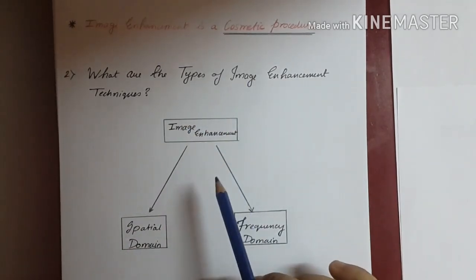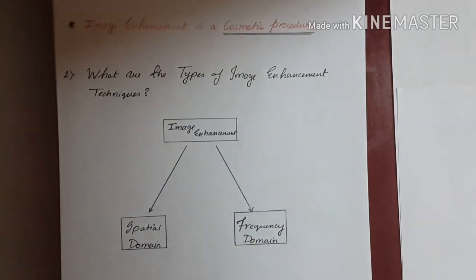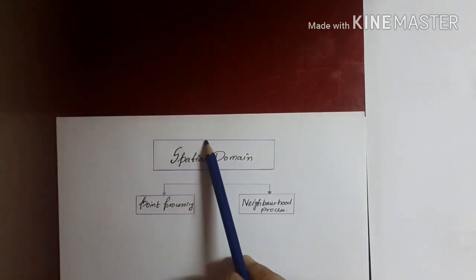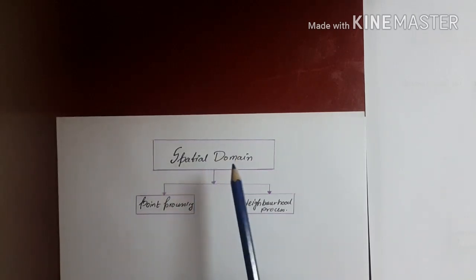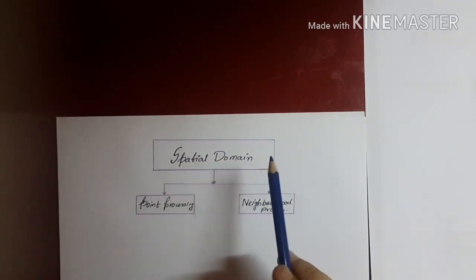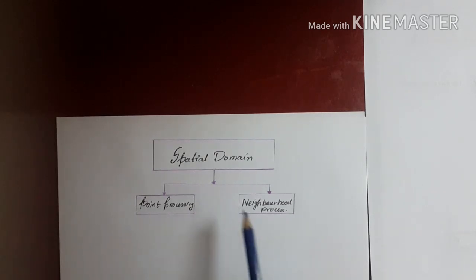Spatial domain techniques of image enhancement are further classified into point processing and neighborhood processing. By point processing, we imply that whatever changes or modifications we do, we do it with the pixels.